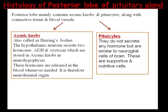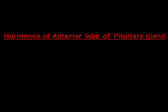The posterior lobe mainly contains axonic knobs and pituicytes, along with connective tissue and blood vessels. Axonic knobs, also called Herring bodies, store two hormones secreted by hypothalamic neurons: ADH and oxytocin; these are released into the blood when needed, giving the posterior lobe its neurohaemal origin. Pituicytes do not secrete any hormone but are similar to neuroglial cells of the brain, serving as supportive and nutritive cells.